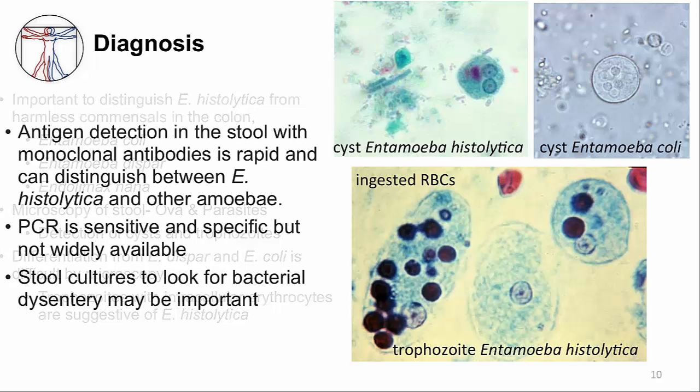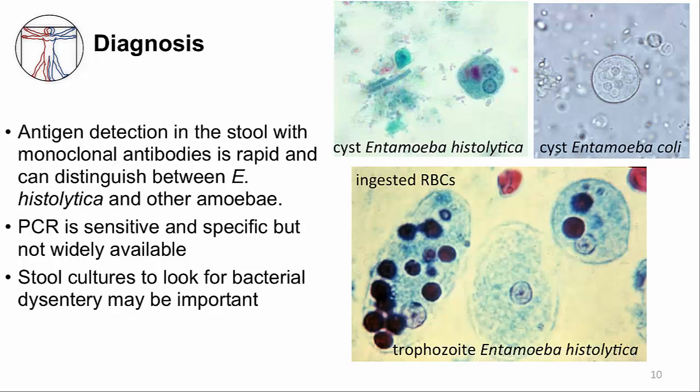Today, we have more sophisticated molecular tests to detect Entamoeba histolytica infections. For example, there are antigen tests using monoclonal antibodies that rapidly make the diagnosis. Another emerging test is the use of PCR, which is sensitive and specific but not yet widely available. When considering the differential diagnosis of inflammatory diarrhea, you should get stool bacterial cultures to look for bacteria, though this will not find the amoeba.